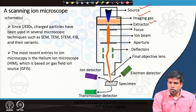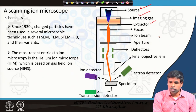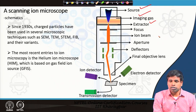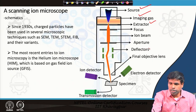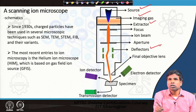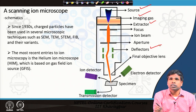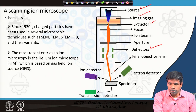The ion beam passes through different apertures — as in the electron microscope, apertures are used to reduce the aperture angle and control beam current. Like the scanning electron microscope, we also have deflector coils that allow us to scan the ion beam across the surface in a raster manner. Then we have the final objective lens, and the ion beam strikes the surface of the specimen.